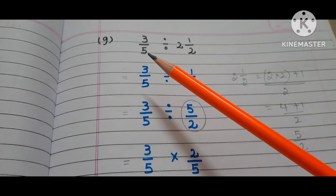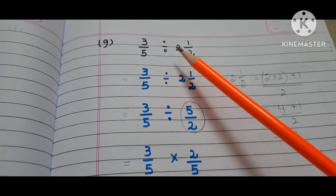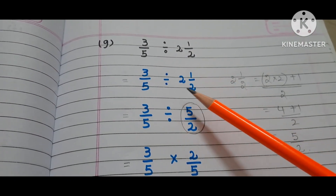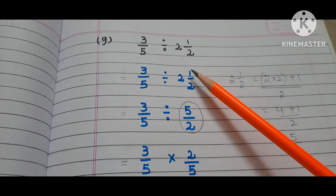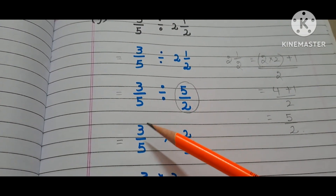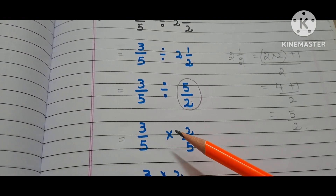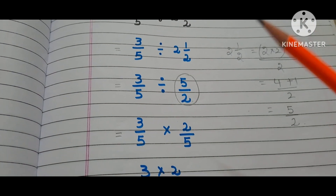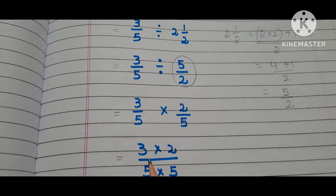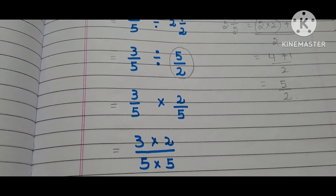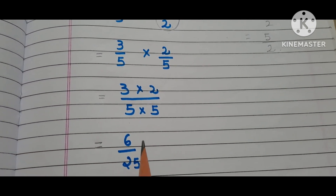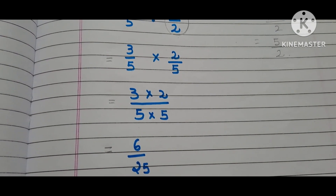Now let us move to the G bit. The question is 3/5 divided by 2½. Here, 2½ is a mixed fraction. Convert 2½ into an improper fraction: that is 5/2. Now, copy down the first fraction 3/5. Write the multiplication symbol instead of the division symbol and write the reciprocal of 5/2, that is 2/5. That is 3 times 2 by 5 times 5 — 6 by 25. So, the answer is 6/25.